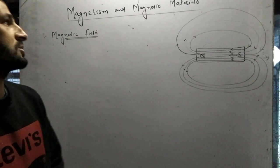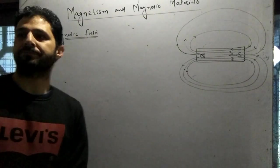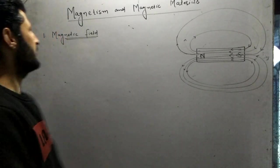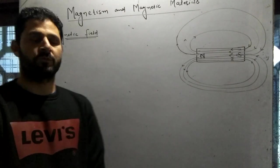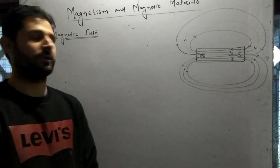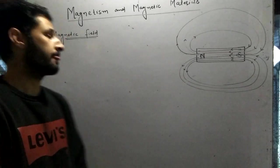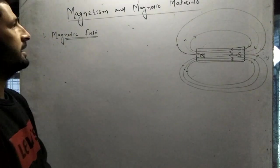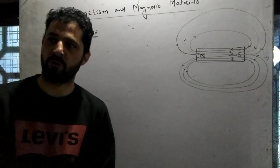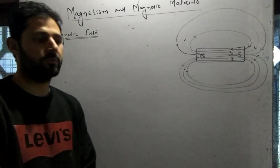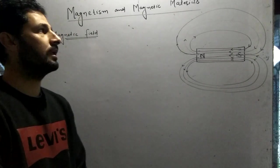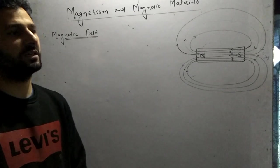Assalamu alaikum dear students. Today we have to discuss the third subunit of magnetism — magnetism and magnetic materials. We have already discussed magnetic fields and cyclotrons. Today our topic is magnetism and magnetic materials, including classification of magnetic materials: diamagnetic and ferromagnetic, which will be discussed at the end. We will first discuss the magnetic field and Earth's magnetic field.